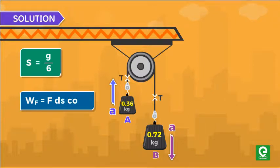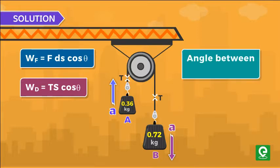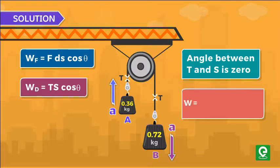Now work done by force is given by the relation F ds cos theta. Here the constant force is tension. Work done by tension is equal to T s cos theta. The angle between tension and displacement is zero. Putting the values of tension and displacement, we get work done by tension equal to 8 Joules.